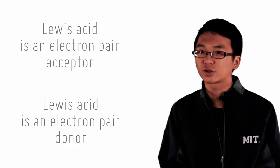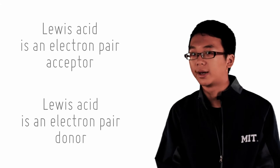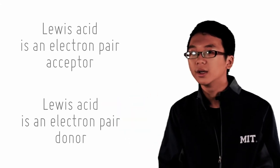An acid is an electron pair acceptor and a base is an electron pair donor. So in this example, O2- is a base and the H atom, or by extension the water molecule, is an acid.